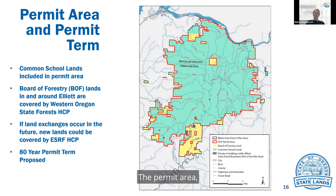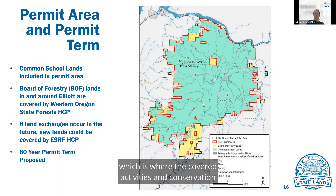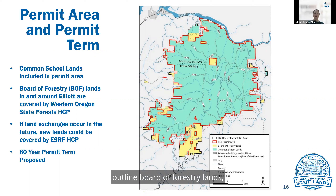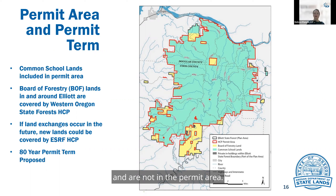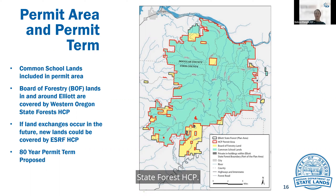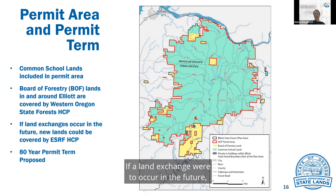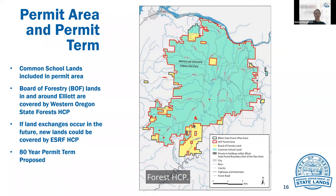The permit area, which is where the covered activities and conservation actions will occur, is denoted by the green color and red outline. Border forestry lands, which are in yellow, are part of the plan area but are not in the permit area — these lands are part of the Western Oregon State Forest HCP. If a land exchange were to occur in the future, these lands could be covered under the Elliott State Research Forest HCP.